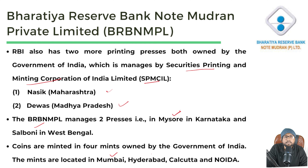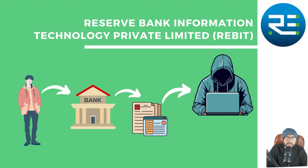Coin mints are located in four places: number one is Mumbai, number two is Hyderabad, number three is Kolkata, and number four is Noida.